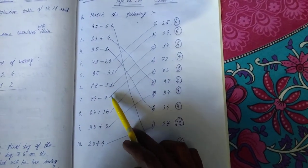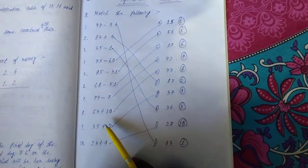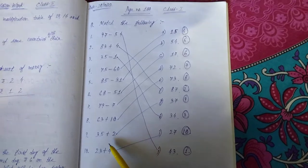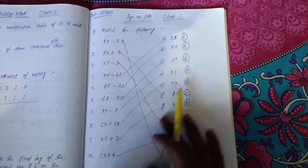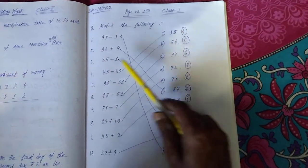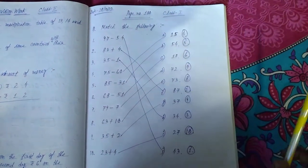Also 68 minus 51, 79 minus 7, 63 plus 10, 35 plus 2, 23 plus 4. On the opposite side of these numbers, the answers are given. So first of all, you will have to take out the answers by yourself.